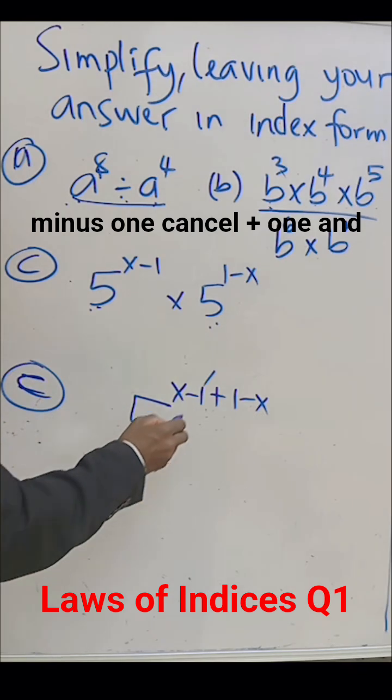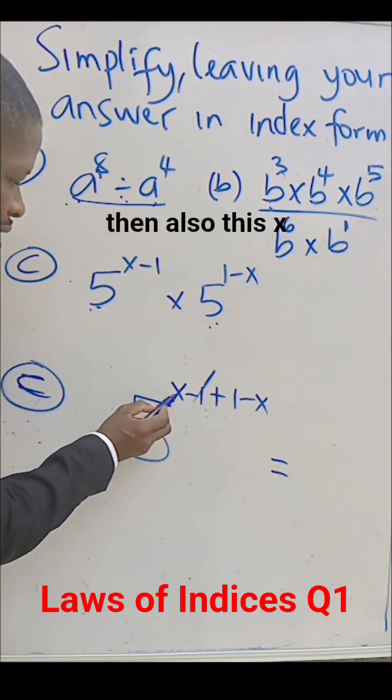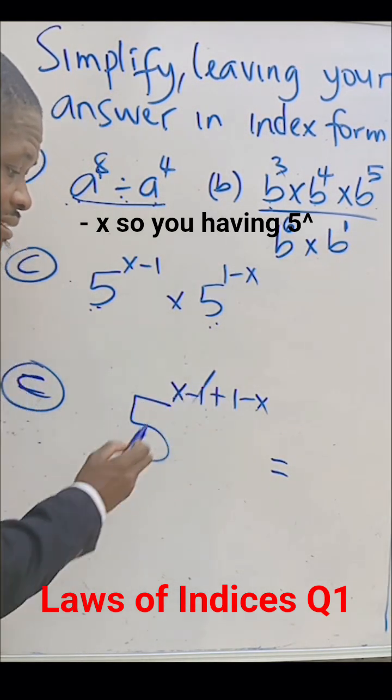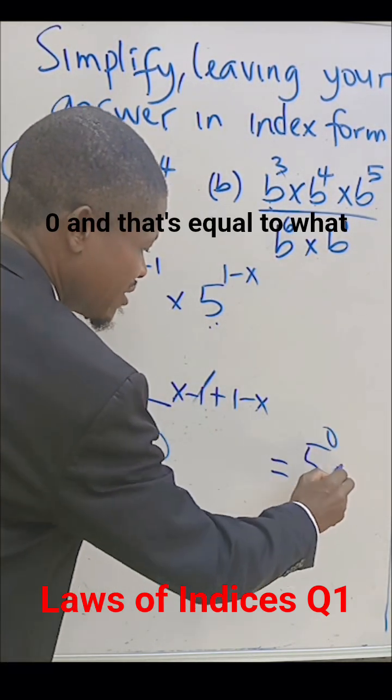Negative 1 plus negative X, so you are having 5 to the power of 0 and that's equal to 1.